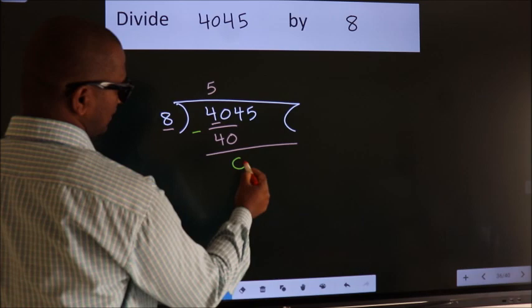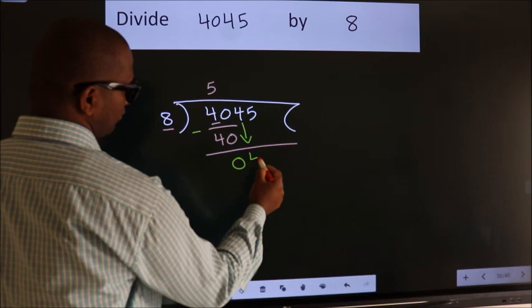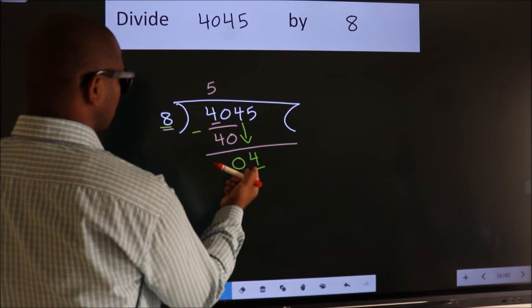After this, bring down the beside number. So, 4 down. Here we have 4, here 8. 4 is smaller than 8, so we should bring down the second number.